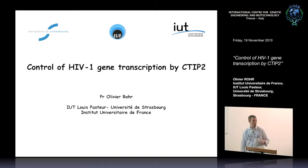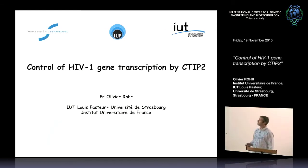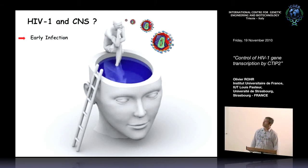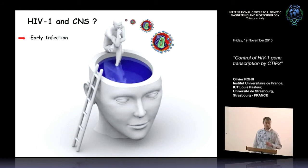Why are we studying post-integration latency of HIV-1 in the brain? The first reason is that the brain is infected very early after the primary infection. We can find virus in the brain after just two weeks post-infection, which means the reservoir can be established in the CNS very early.